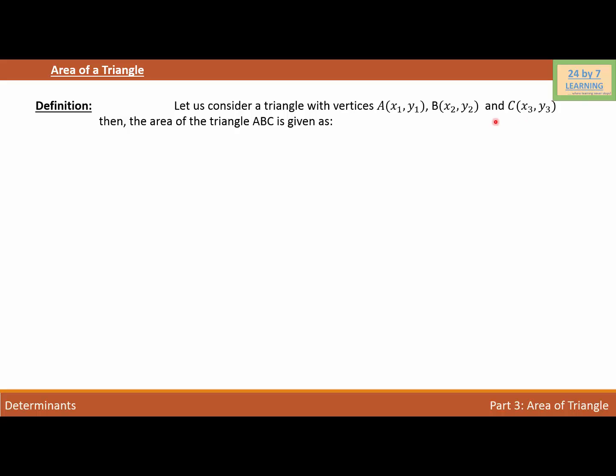Then, the area of the triangle ABC is given as delta is equal to 1 over 2 determinant of X1, Y1, 1, X2, Y2, 1, X3, Y3, 1.